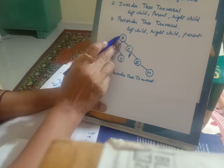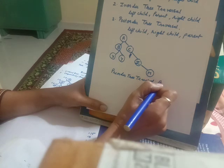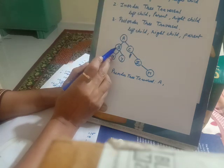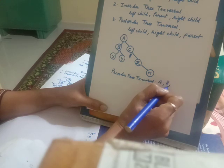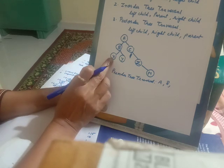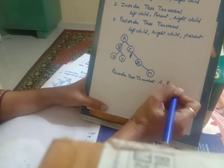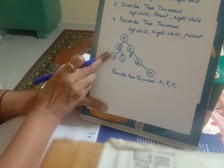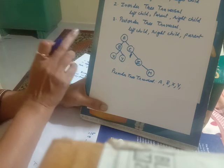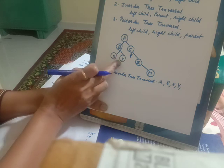After processing the parent, we move towards the left child B. B is now a parent and should be processed. We move to the left child of B, which is X. X doesn't have any children, so it is printed as the left child. After printing the parent and left child, we process the right child Y. We have processed the parent, left child, and right child of this subtree.